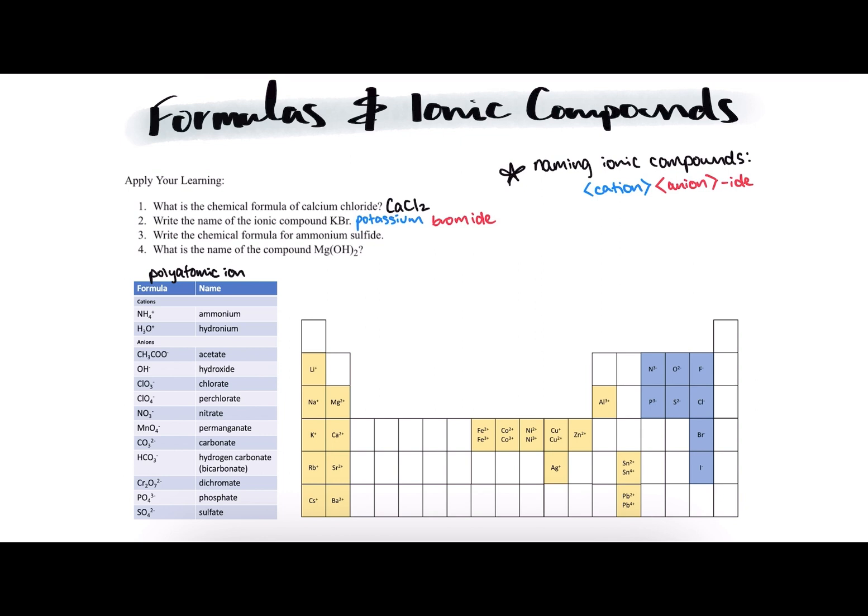We can see ammonium is this first one here under the cation section. It has a plus 1 charge. We basically follow the same procedure. We just make sure to group NH4 together since it is all one ion. Sulfide tells us that the anion should be sulfur with a 2 minus charge. Following our shortcut from before, making sure to group all of our NH4 together, we can move the 1 across to the sulfur and the 2 across to the ammonium ion.